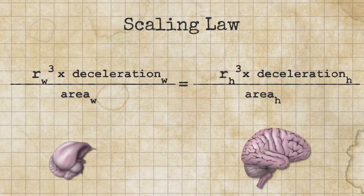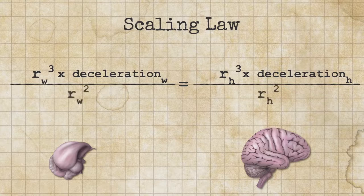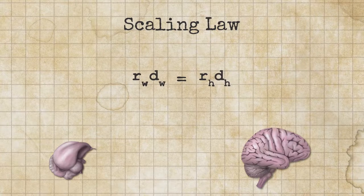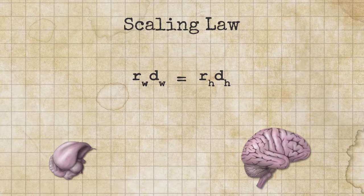So in both cases cancelling out the radius times the deceleration that the woodpecker brain can tolerate before injury is equal to the radius times the deceleration that the human brain can tolerate before injury.